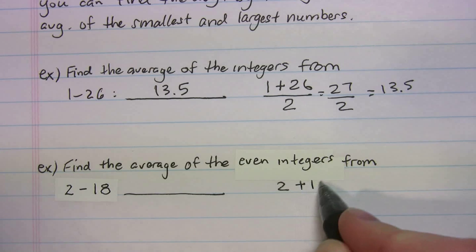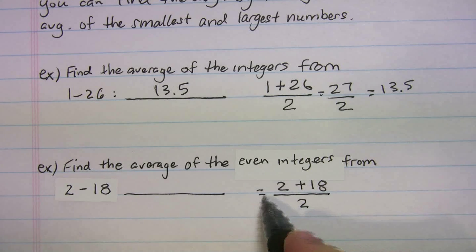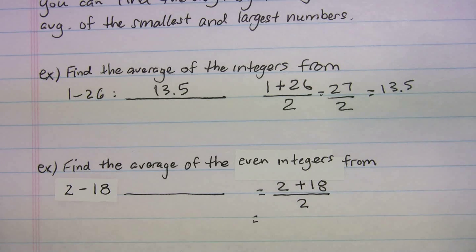All right. So it says, find the average of the even integers from 2 to 18. Well, it doesn't matter. We're still evenly spaced. The smallest is 2. The largest is 18. We're dividing by two things. All right. 2 plus 18 is 20. 20 divided by 2 is 10.